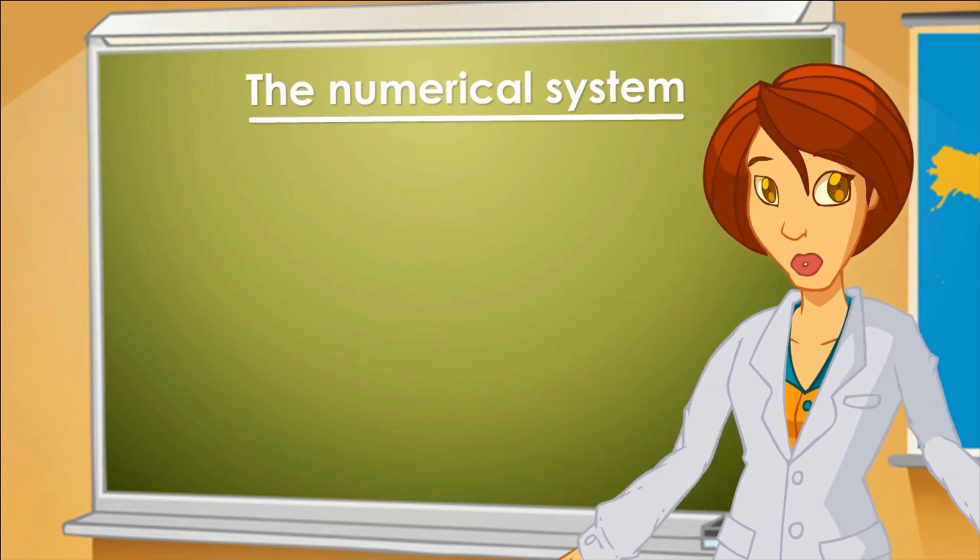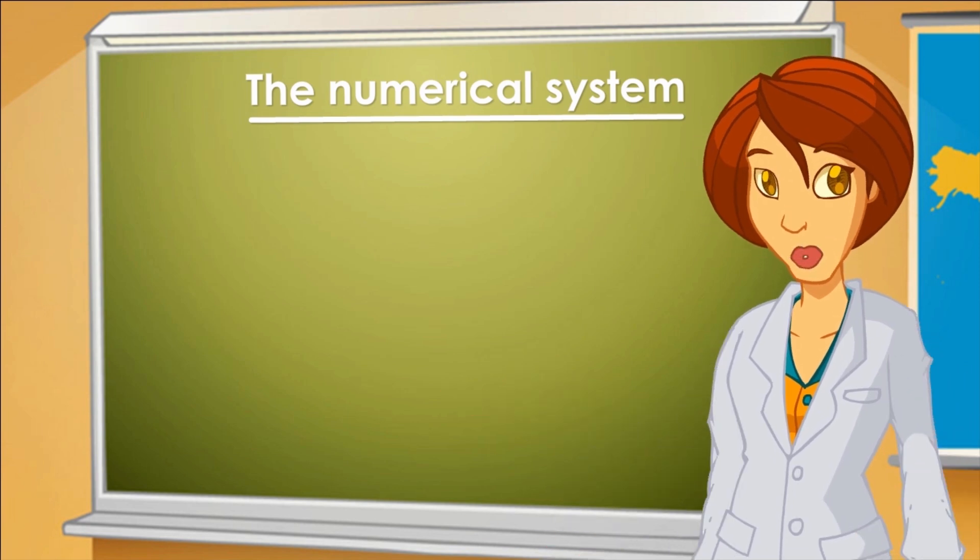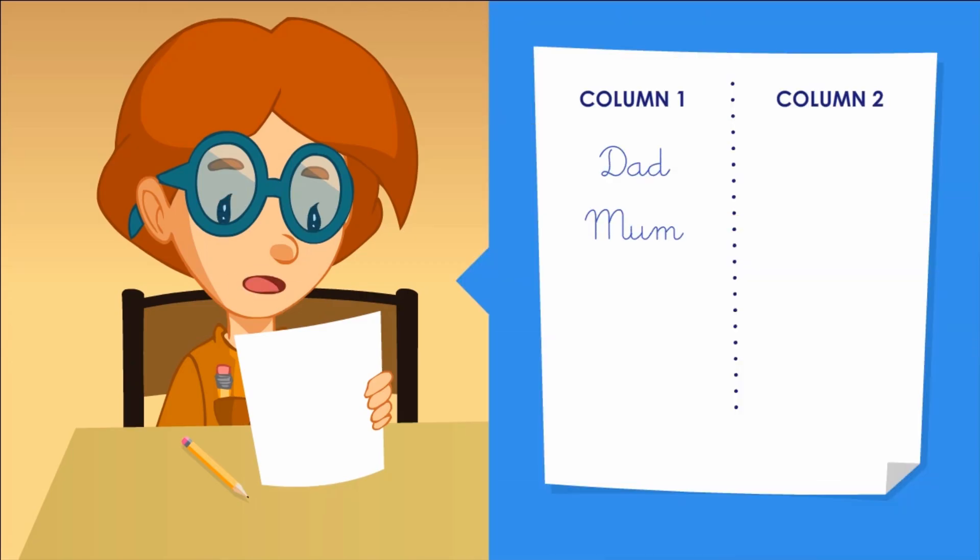Let's see, Matt. Who did you include in the first column? My dad, my mom, my brother, and me. I wrote 39, 33, 13, and 7.